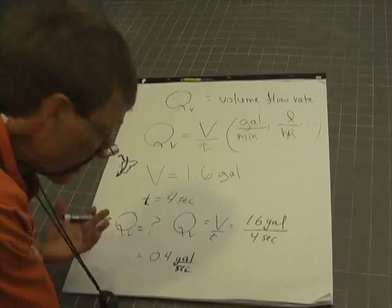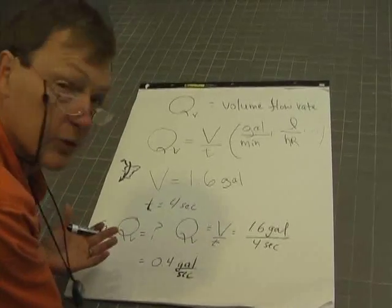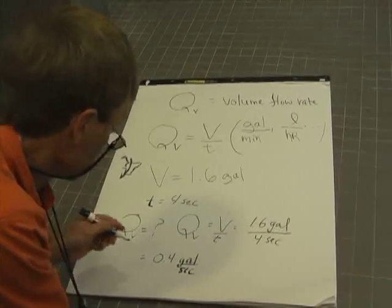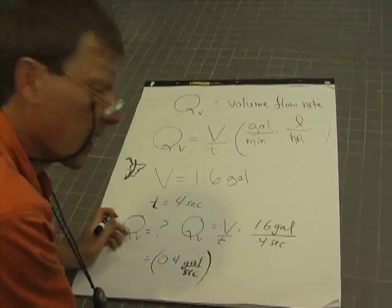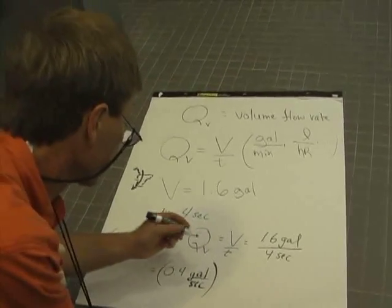Now, if we wanted, we could do a conversion. Maybe we should just do a conversion. Let's do it in gallons per minute. So let's see. I want to take this 0.4 gallons per second and convert it to gallons per minute.